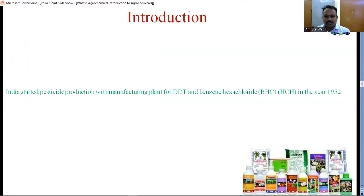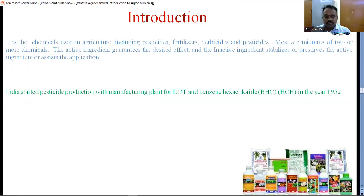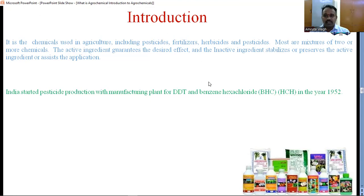Then nomenclature. In introduction, what is agrochemical? Agrochemical is the chemical used in agriculture, including pesticide, fertilizer, and herbicide. Most of the chemicals are toxic. It is a mixture of two or more chemical components. The active ingredient plays a very important role in agrochemicals — they have the primary content of agrochemicals. And then second is the inactive ingredient — they stabilize or preserve the active ingredients.